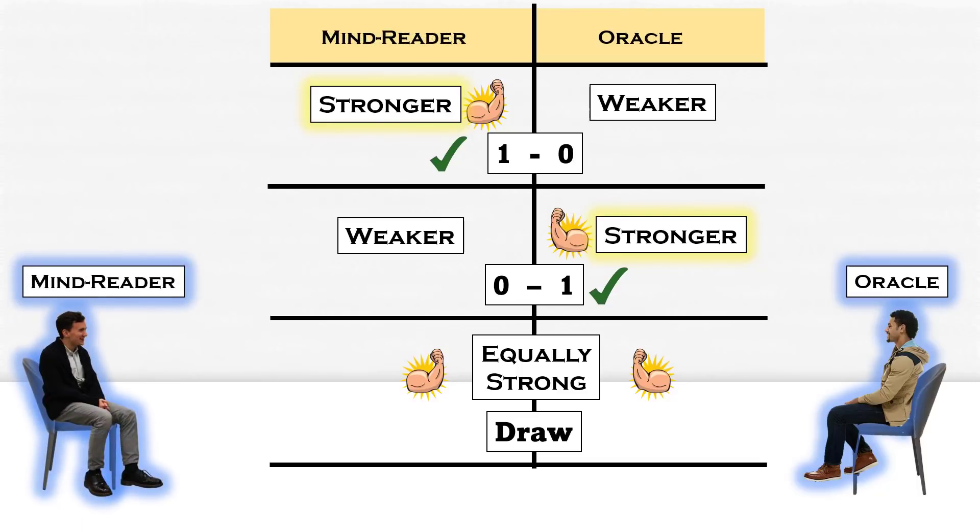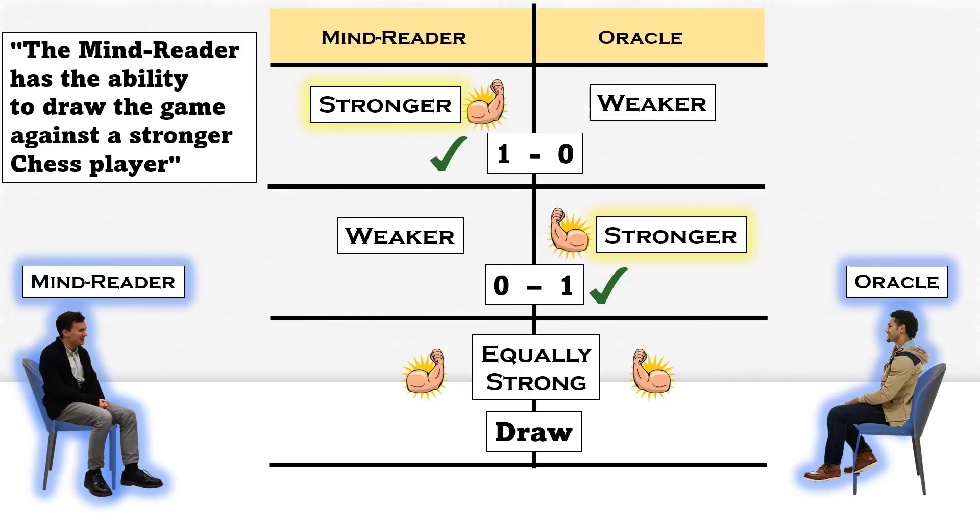But when the Oracle is playing against a supernatural mind reader, who has the ability to draw the game against a stronger chess player, these would be the three possible outcomes of the game based on the chess skills of the mind reader and the Oracle. And here you can see the mind reader is taking the advantage of his supernatural mind reading ability to draw the game in case if his opponent is stronger than him.